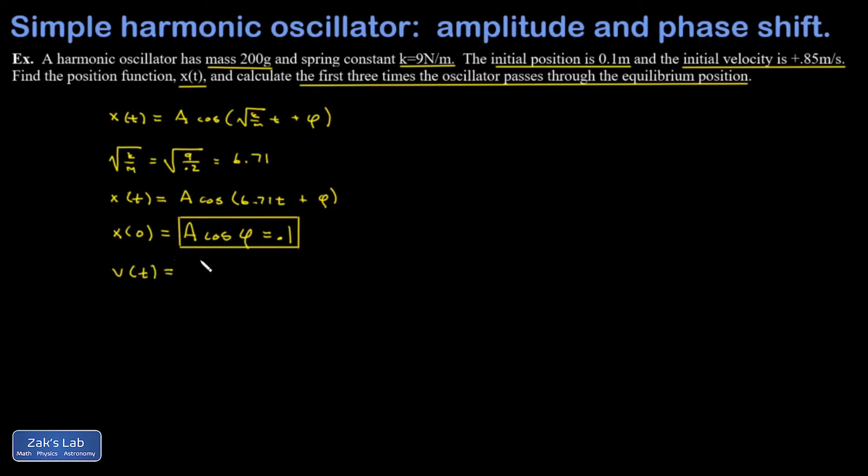And when I differentiate x, I get 6.71 because of the chain rule, minus sign because I'm differentiating the cosine function, A is a spectator here, sine of 6.71t plus φ. When I evaluate that at t equals 0, I get negative 6.71 A sine φ. And we're told that initial velocity is 0.85. This allows me to solve for A sine φ.